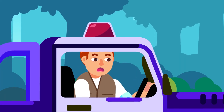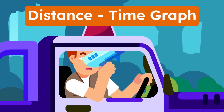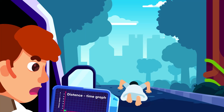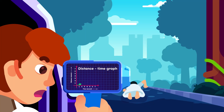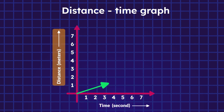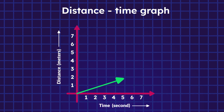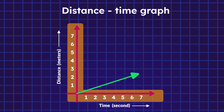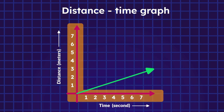One such graph is a distance-time graph. The distance-time graph visualizes the distance traveled, D, by an object over time, T, which are represented by the vertical and horizontal axis respectively.